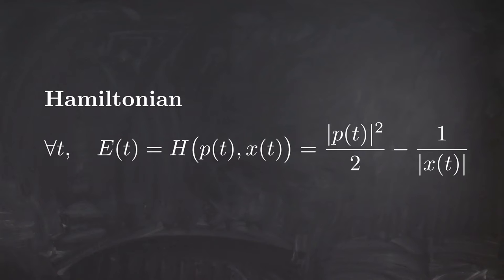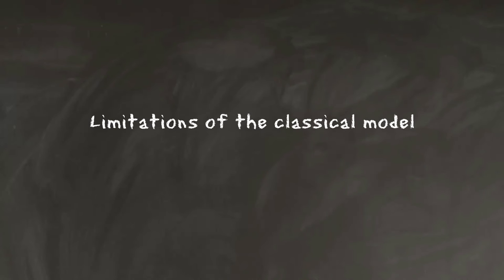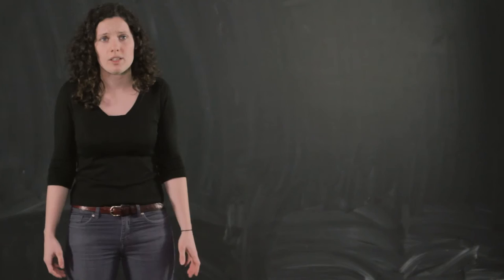Don't forget that the Hamiltonian is equal to the total energy of the system at all times. This will be of importance later. Now we have determined the classical evolution of the hydrogen atom. In this presentation, the electrons move around the nucleus like planets around the Sun. So what is next? Do we have all the information we need about our system?